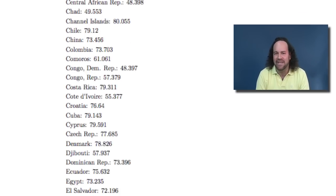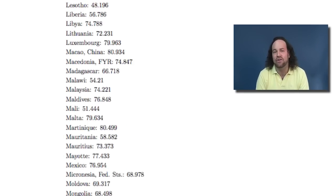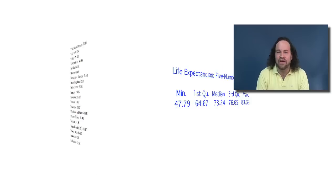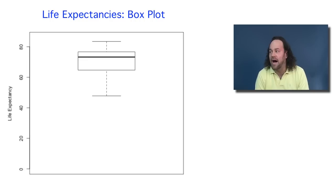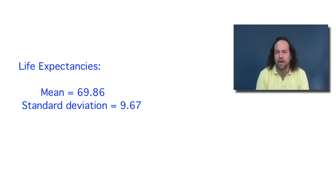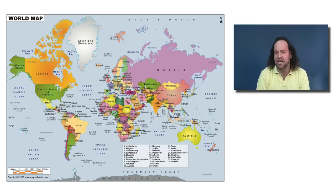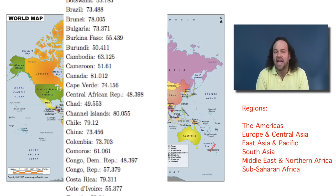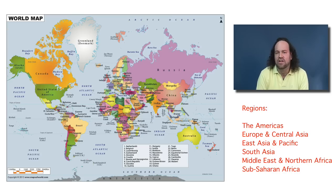Let's again consider those 197 different countries and territories around the world and their life expectancies. We've already studied these numbers and know how to summarize them with a five-number summary, a box plot, or computed their mean and standard deviation. We also said each of these countries and territories fits into some region around the world, and we divided the world into six different regions. Now we want to ask: what's the relationship between these countries' life expectancies and the region of the world that they're in?